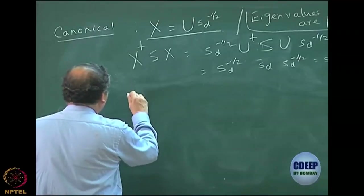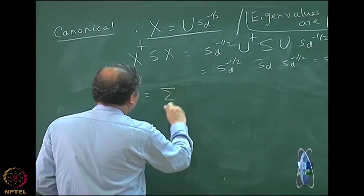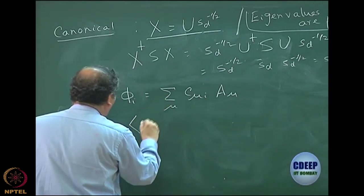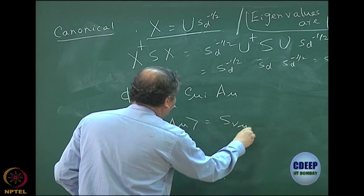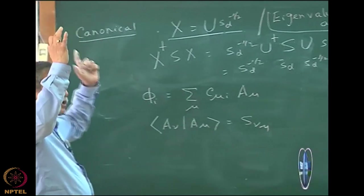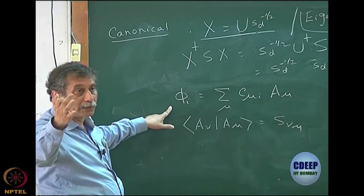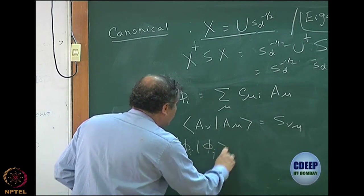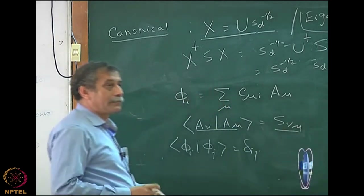Let me go back and analyze the fact that when I said that phi_i is a sum over the basis, the overlap between the basis functions or the original basis functions is S_νμ. I must mention here that we started with spin orbitals which are orthonormal, which means my space orbitals for closed shells are also orthonormal. So phi_i|phi_j is also δ_ij. However, the atomic orbitals have an overlap matrix.